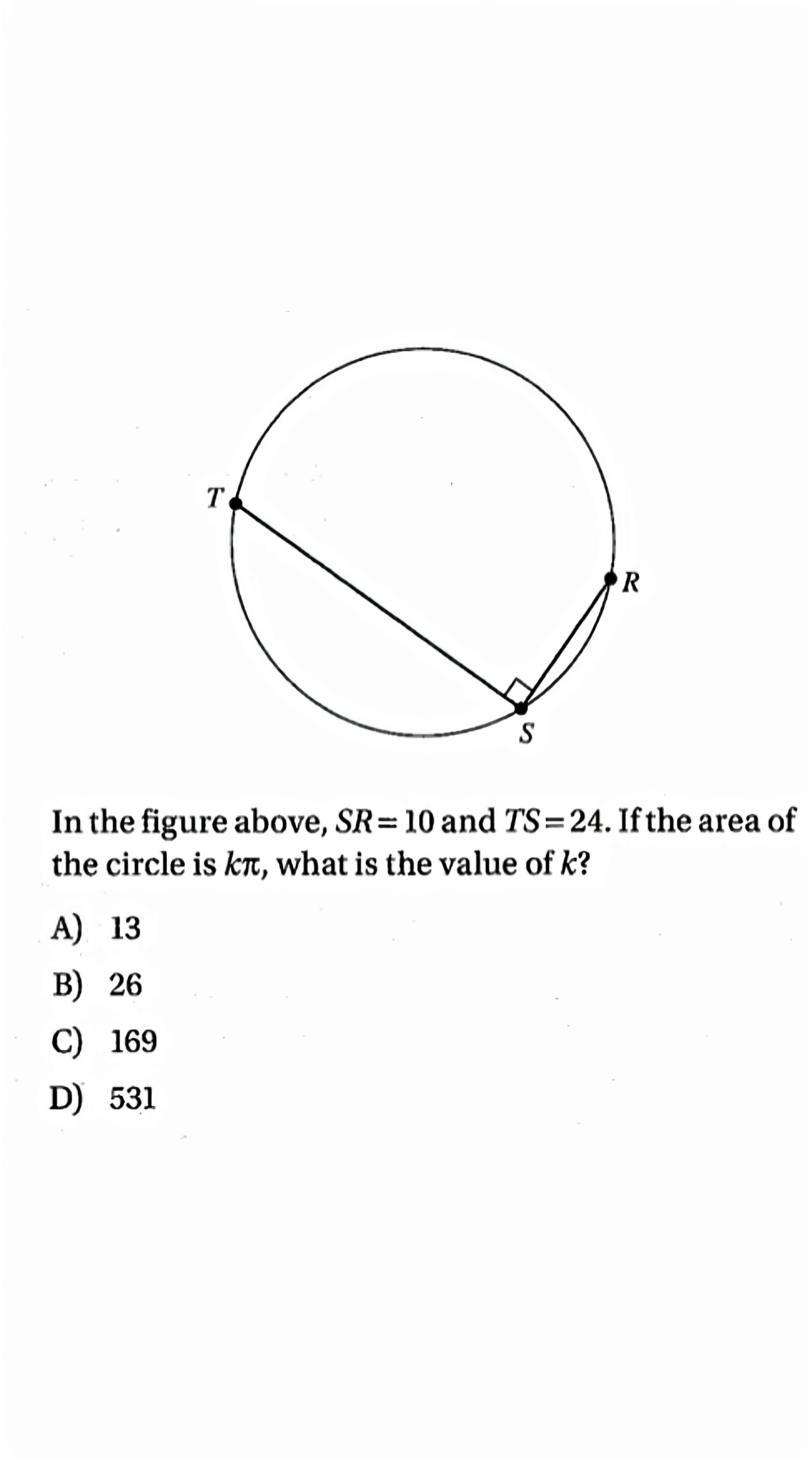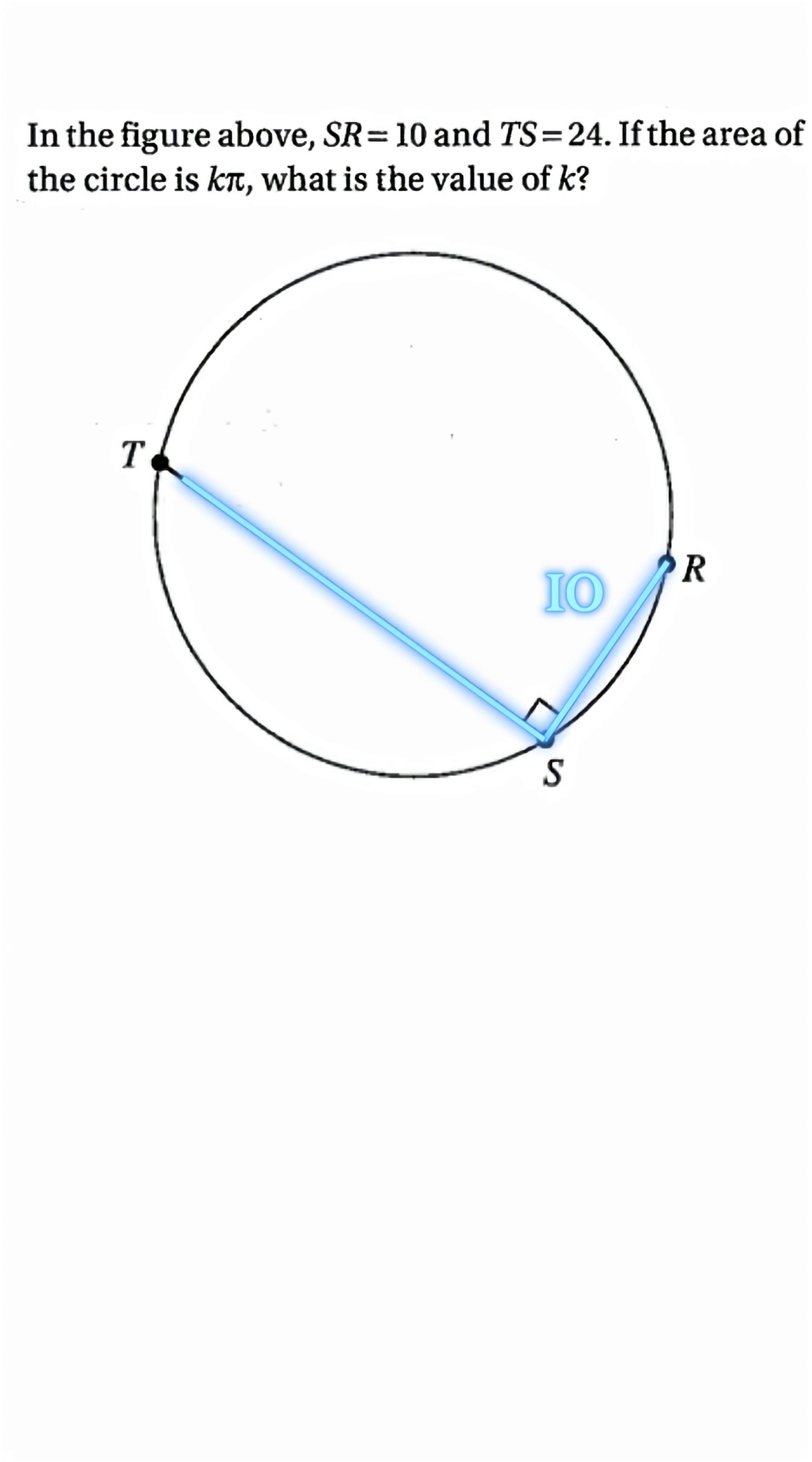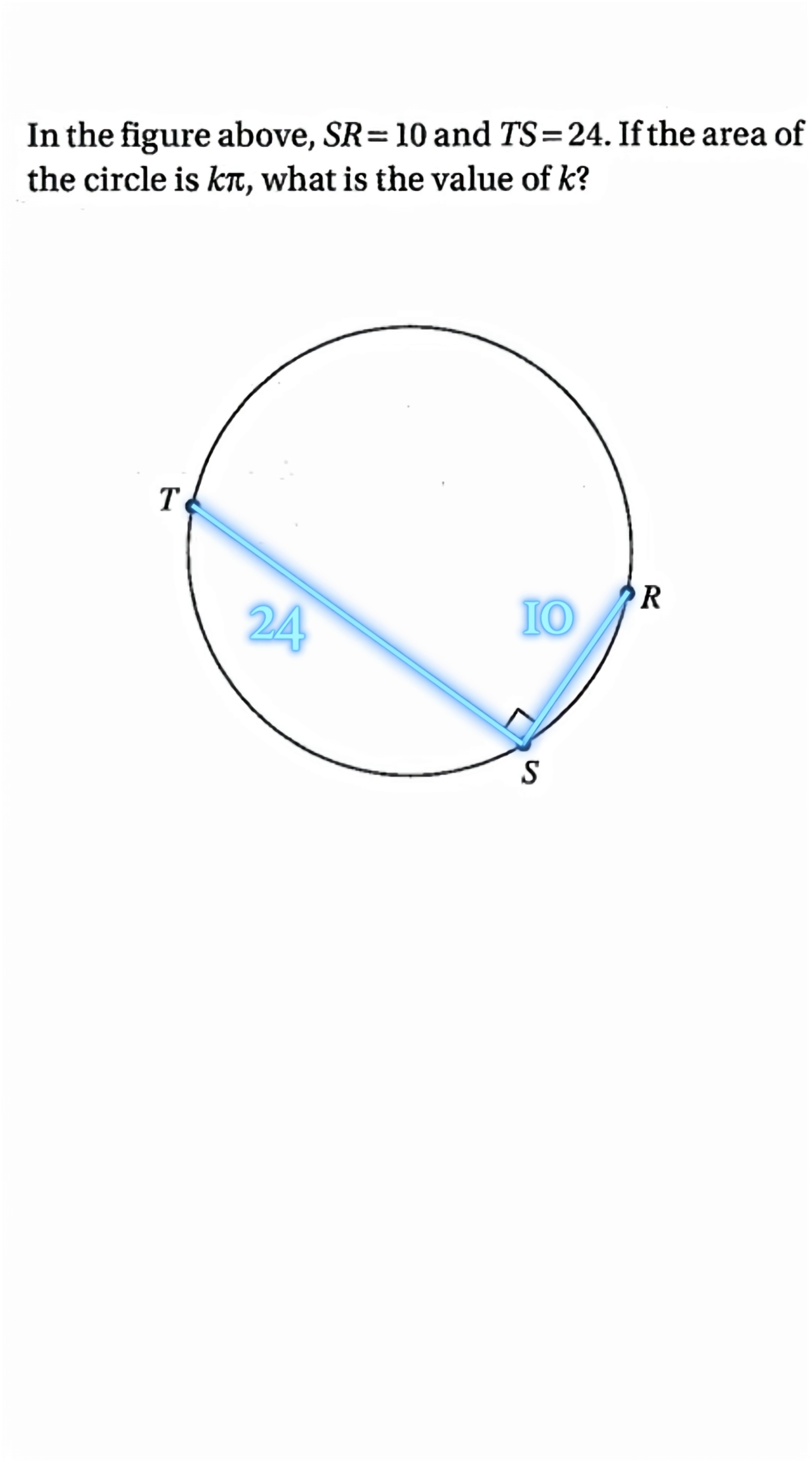Now, don't rush to plug values and step back. You know area of a circle equals pi r squared, which means k equals r squared.